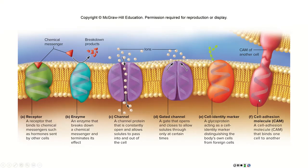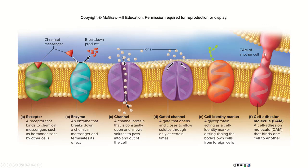Over here we have something called cell adhesion molecules, or CAMs. What we're seeing is one cell has a CAM sticking off of it, another cell has a CAM sticking off of it, and those two CAMs grab hold of each other and lock — allowing these two cells to bind to and hold on to each other.